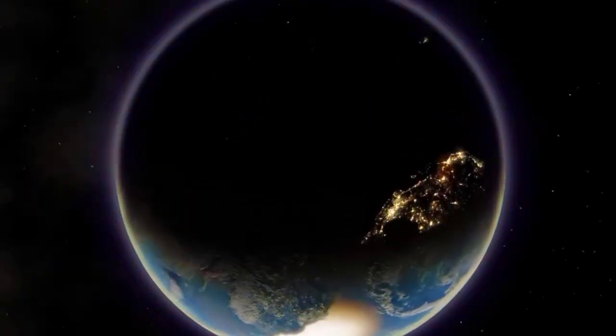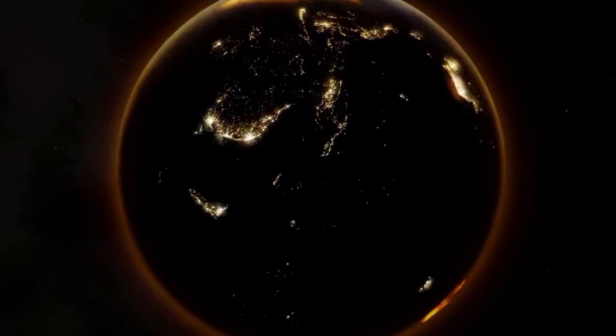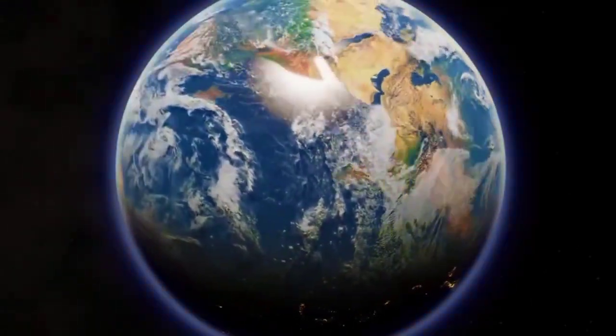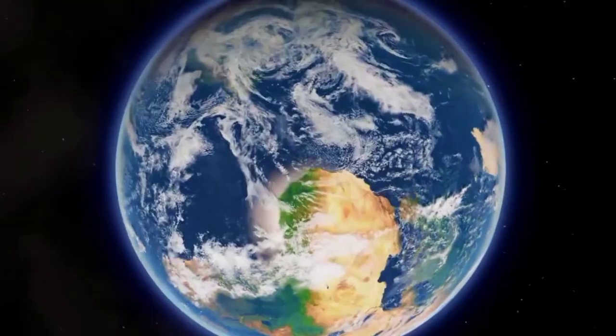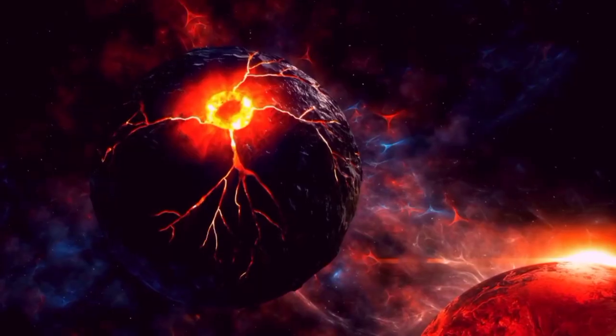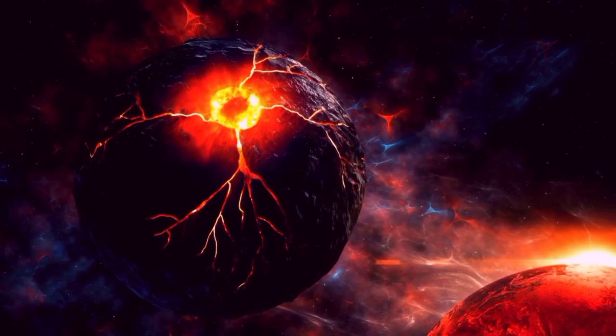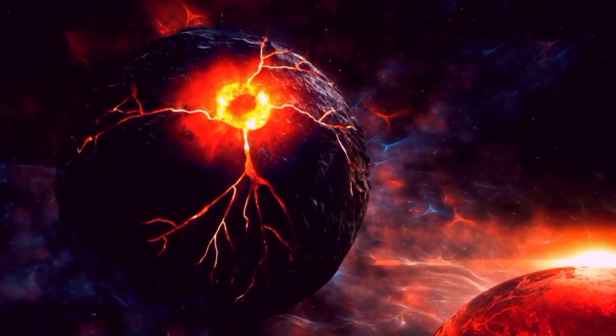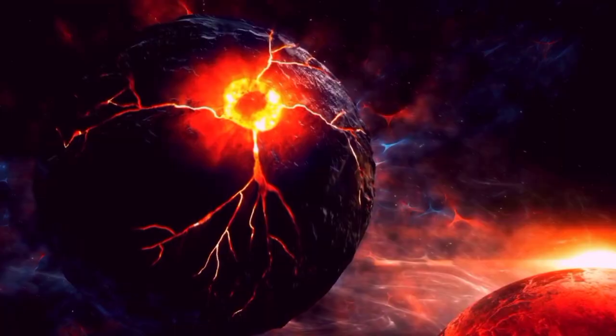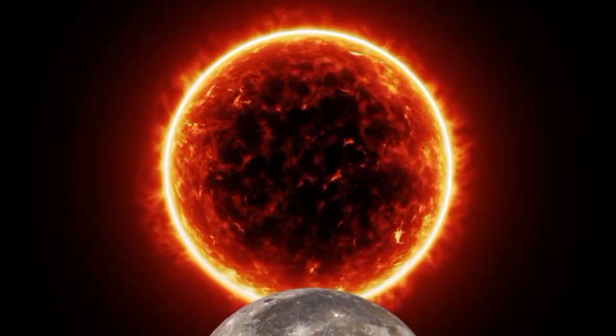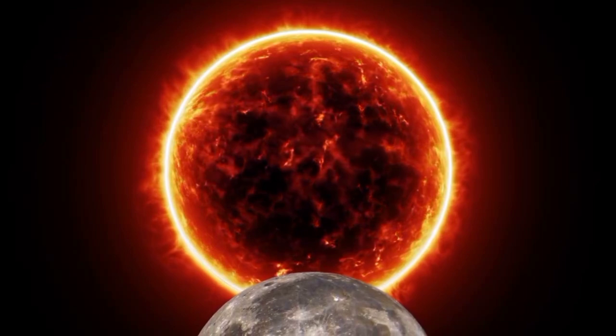However, the challenges of observing such a distant and faint object cannot be overstated. One of the most pressing questions is whether Proxima b is tidally locked, meaning one side of the planet permanently faces its star while the other side is in constant darkness. If this is the case, the planet would have extreme temperature differences between its day and night sides.